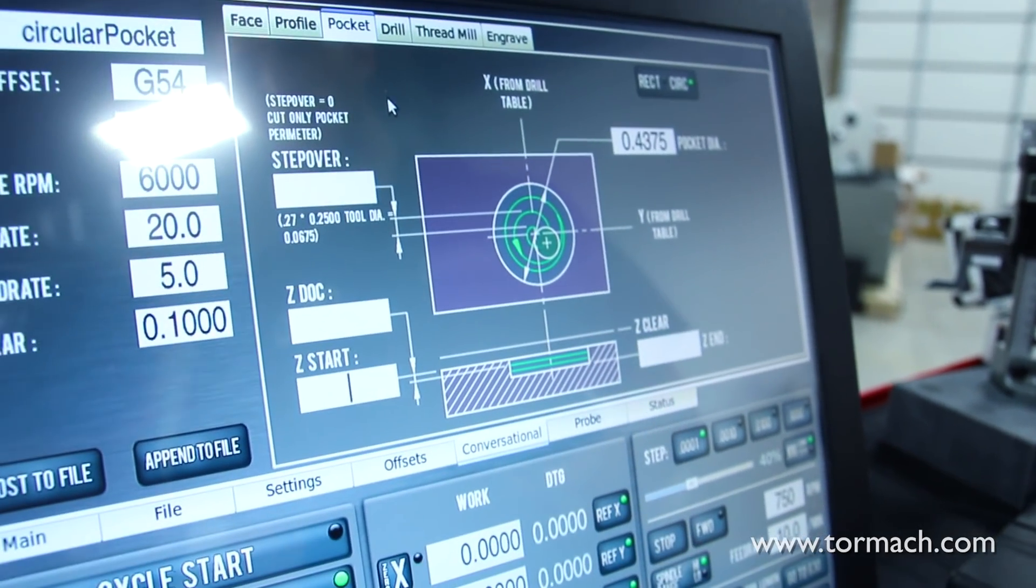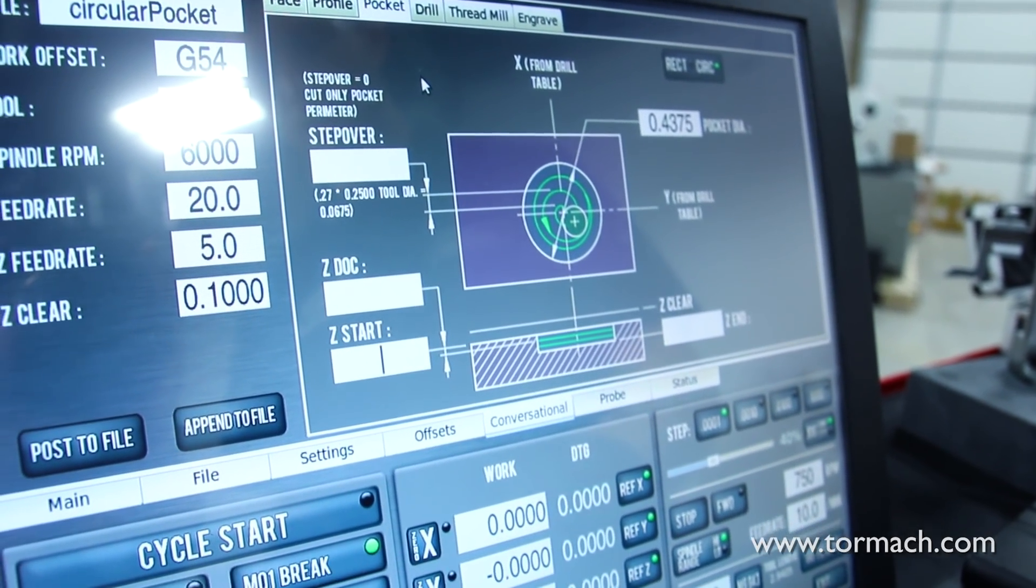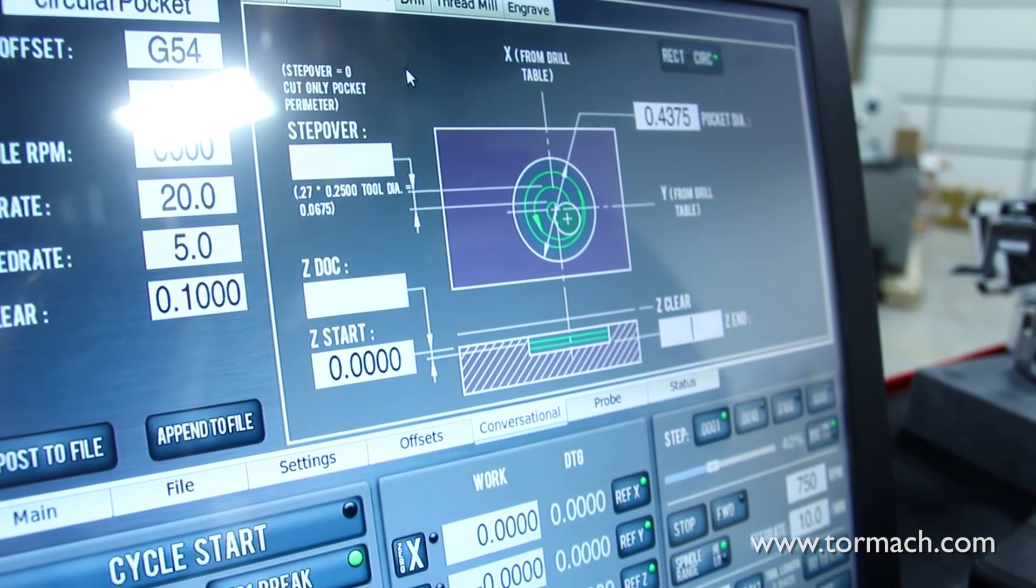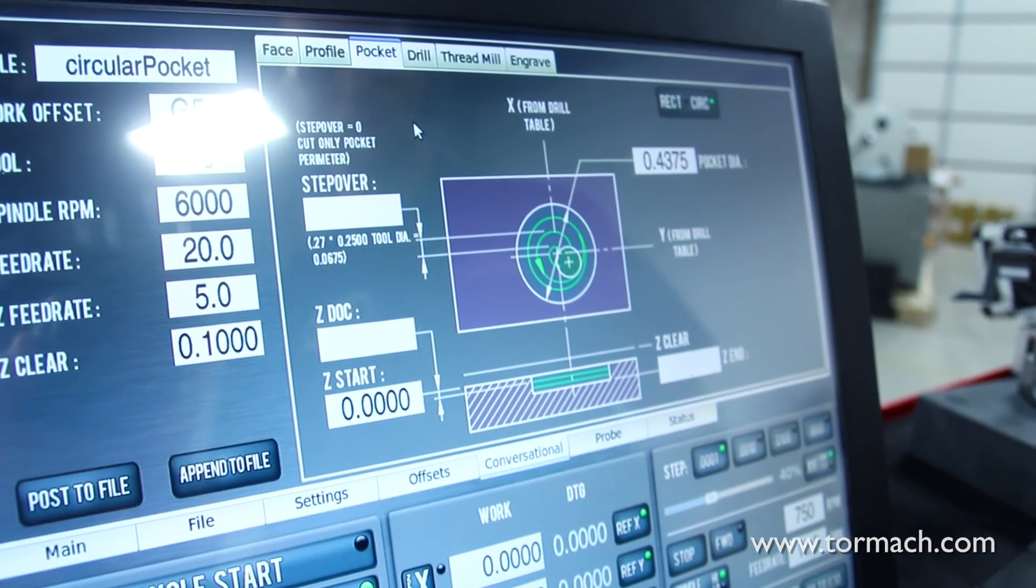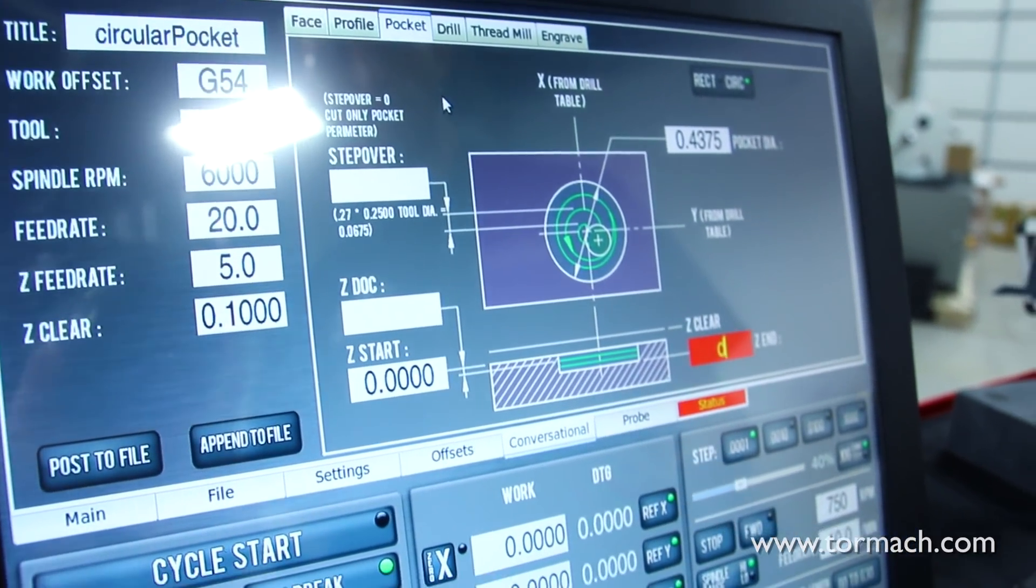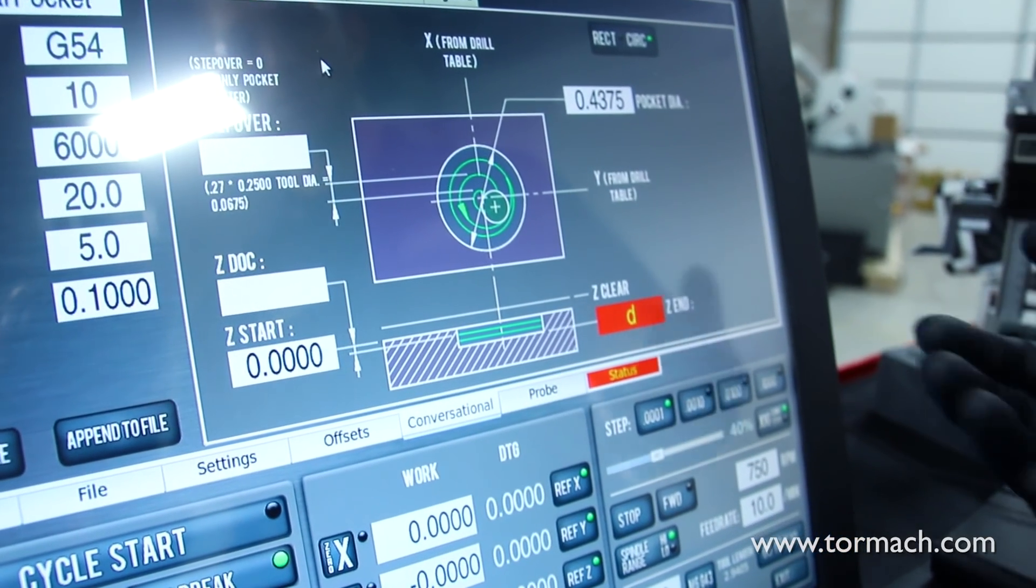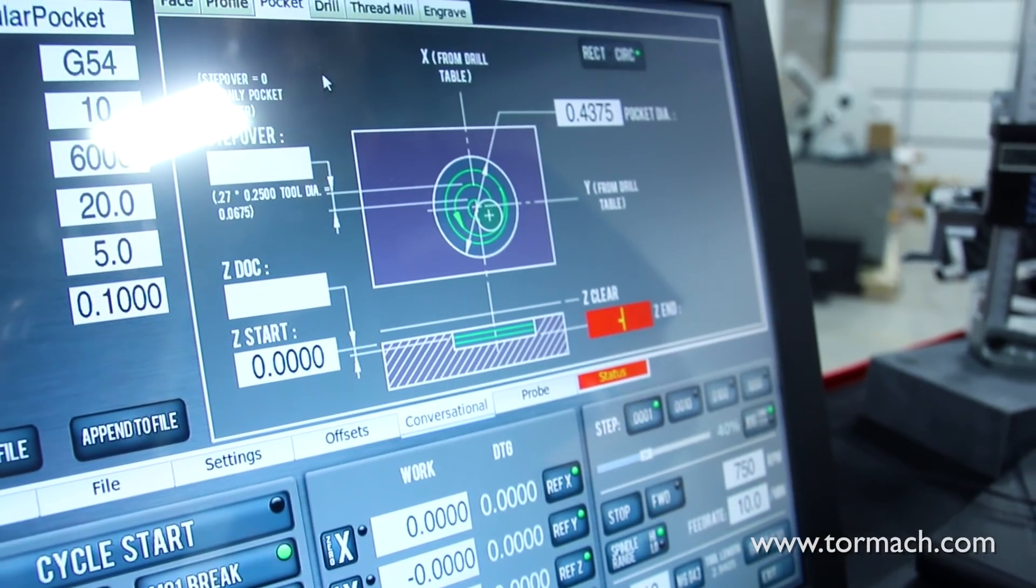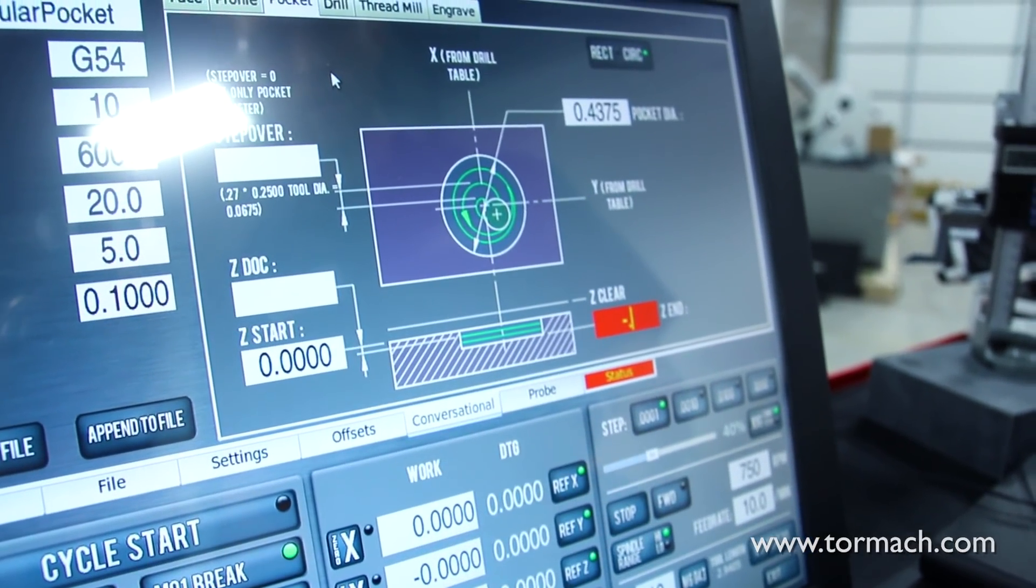It jumps us down to our Z start position. We want to start at the top of our part which is Z zero. As we press enter when we work through these forms, it error checks as we go. If we typo something or put an inappropriate value in, it'll light it up red showing that we have a problem with it.